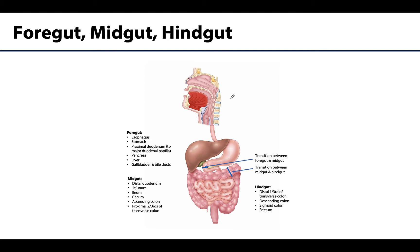The primitive gut tube is divided by folding into three main compartments: the foregut, the midgut, and the hindgut. We'll focus on what those compartments develop into, as those areas share a similar embryological origin, meaning they also share a common arterial source and parasympathetic innervation with a little bit of overlap. We have a handy image here that gives a breakdown of the abdominal structures derived from each embryological portion.